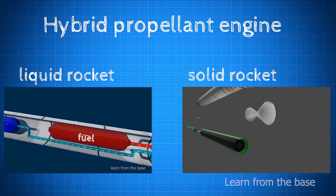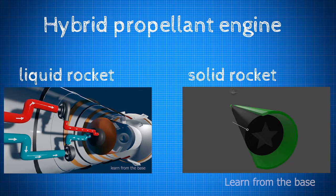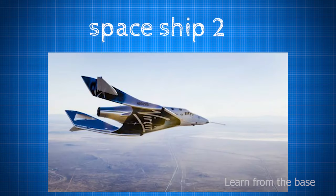The hybrid rocket engine is a combination of solid and liquid propellant engines. The hybrid rocket engine was first used in space on the SpaceShipTwo.